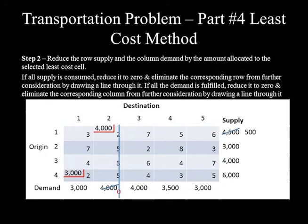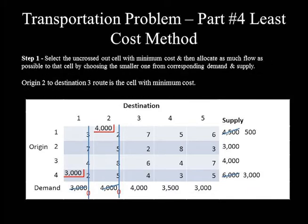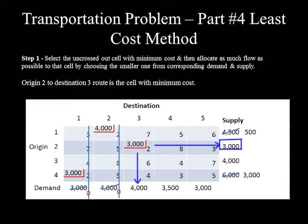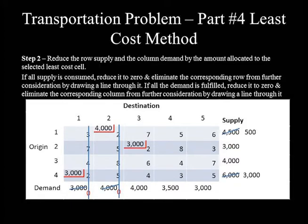Deducting the allocated 3,000 reduces the demand from 3,000 to 0 and the supply from 6,000 to 3,000. Since Destination 1 demand is reduced to 0, column 1 is crossed out. Among the uncrossed-out cells, the next least cost cell is Origin 2 to Destination 3 with a unit cost of 2. Supply is 3,000 and demand is 4,000, so the smaller amount — 3,000 — is allocated. This reduces supply from 3,000 to 0 and demand from 4,000 to 1,000. Since Origin 2 supply is consumed, row 2 is deleted.